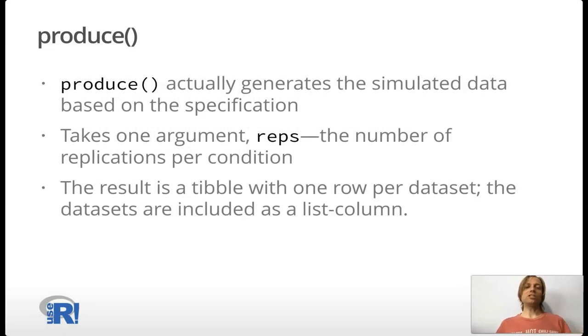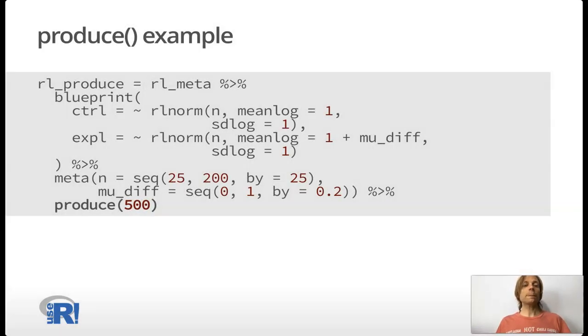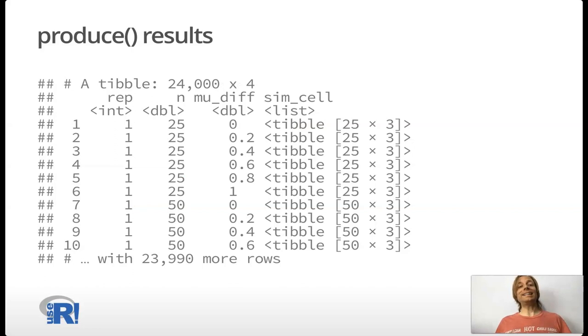Produce actually generates the simulated data based on the specification. It just takes one argument, reps, which is the number of replications per condition. The result is a tibble with one row per data set. The data sets are included as a list column. In this example, it's relatively simple to specify. We produce 500 repetitions per condition. And now we get a tibble where each row is one data set. We have repetition number one where n equals 25, and the difference in means is zero. That's a tibble with 25 rows. Scrolling further down, we can see tibbles with more rows because the sample size is increased. And this has many rows because we actually have 500 repetitions per combination of n in mu diff.